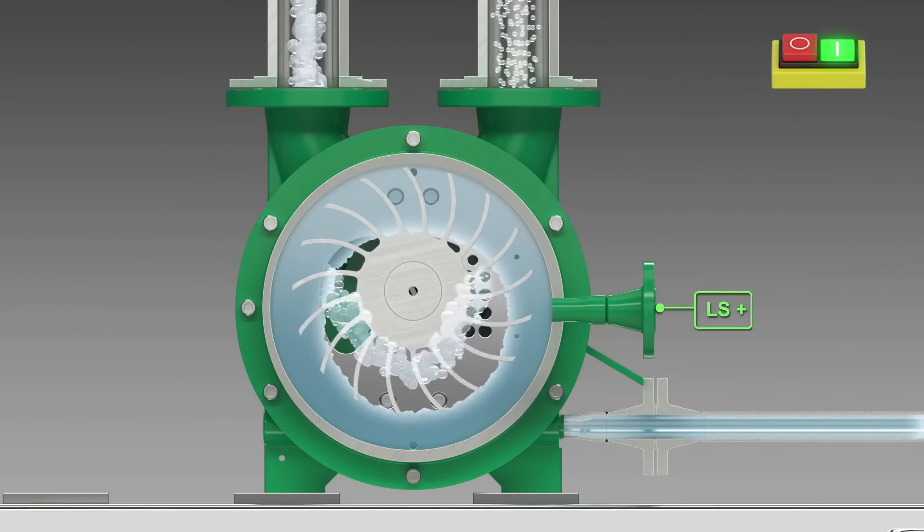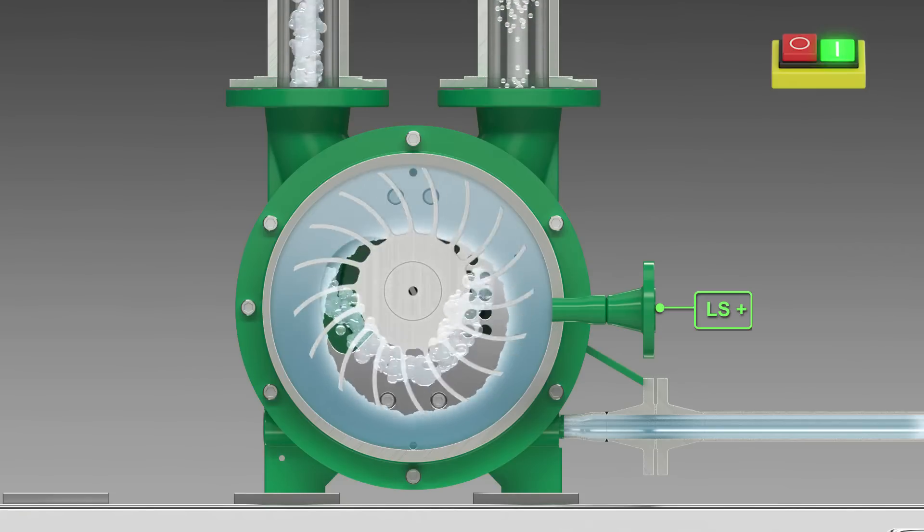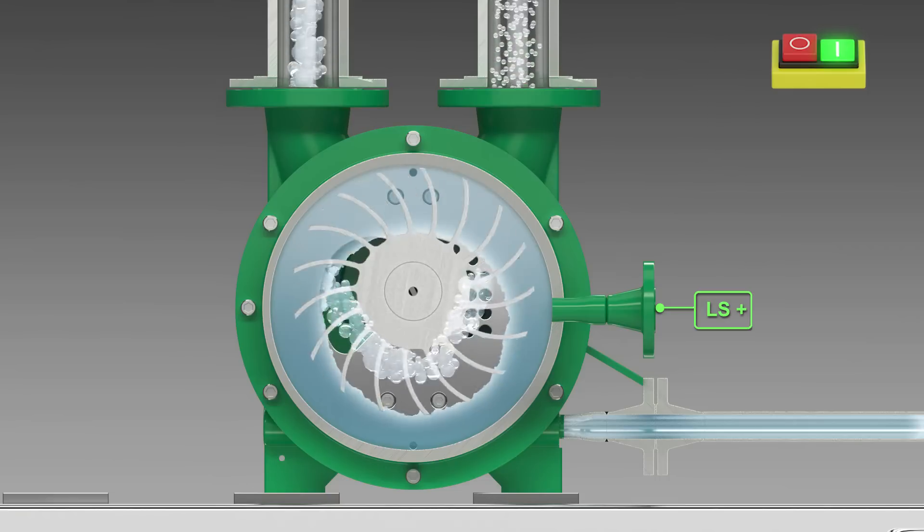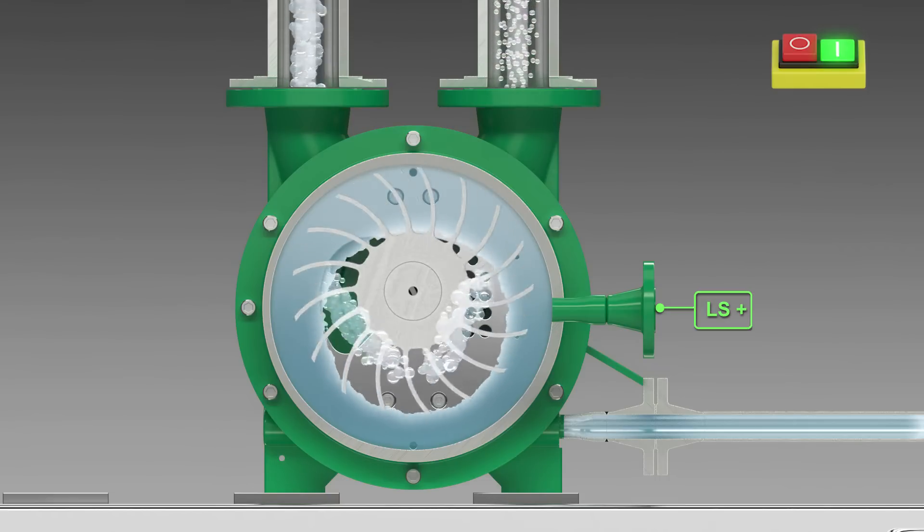The liquid ring separates segments in the impeller blades that enlarge on the suction side as they rotate and consequently draw in the gas to be pumped through the suction slot.